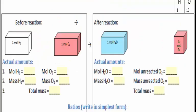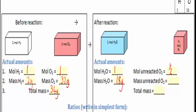Let's work through this. Before the reaction, the actual amount of hydrogen is one mole and oxygen is one mole. Afterwards, we have one mole of water which was formed, and half a mole of oxygen which did not react, because only half a mole was needed. So the mass of hydrogen before the reaction was 2 grams, and the mass of oxygen was 32 grams. The total mass of reactants — or rather of substances which could react, but not necessarily did react — was 34 grams. One mole of water has a mass of 18 grams.